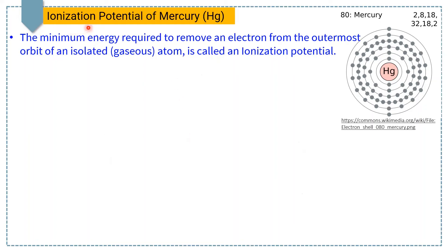In this lecture we will discuss ionization potential. The definition of ionization potential is: it is the minimum energy required to remove an electron from the outermost shell of any isolated atom.